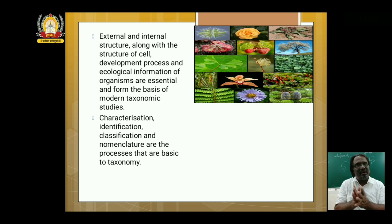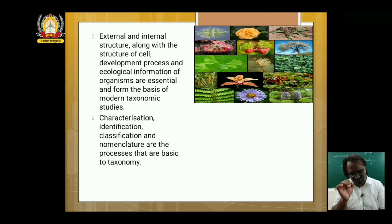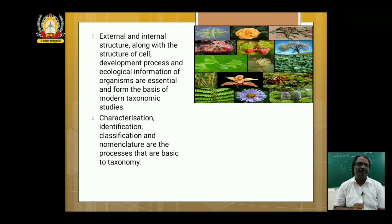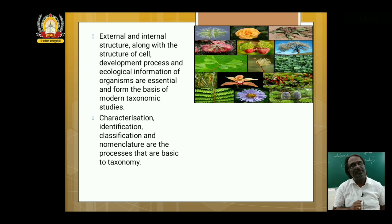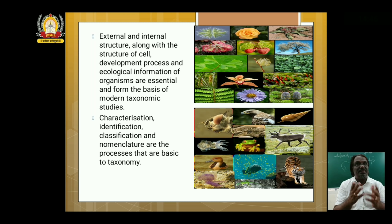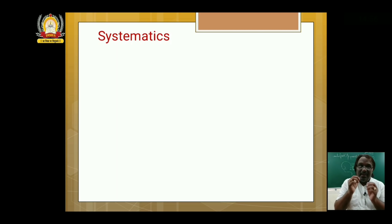Characterization, identification, classification, and nomenclature are the processes that are basic to taxonomy. Hence we say taxonomy is a branch of biology which deals with the identification, classification, and nomenclature of organisms. Nomenclature means naming of organisms. This is the animal kingdom, showing wide varieties of animals.